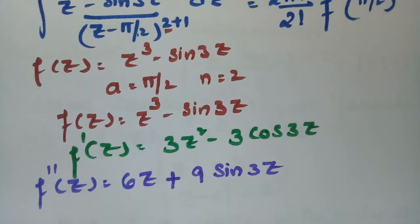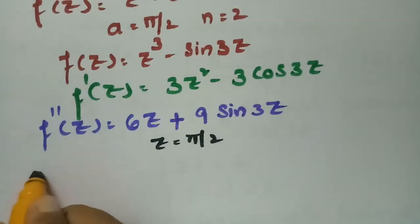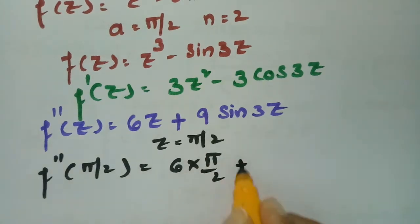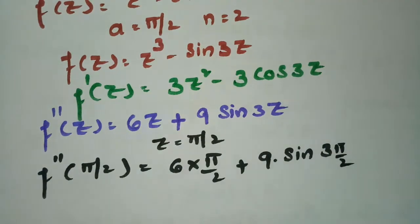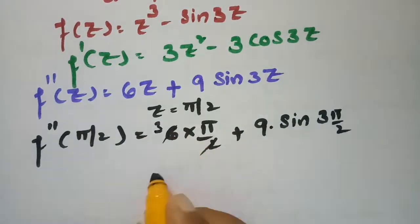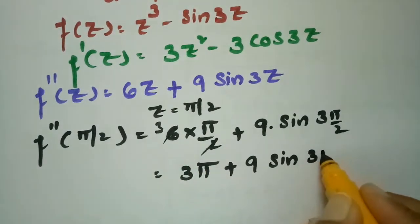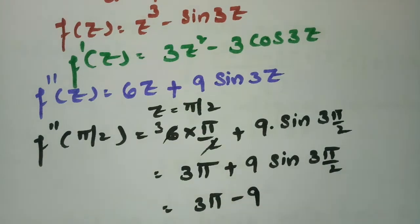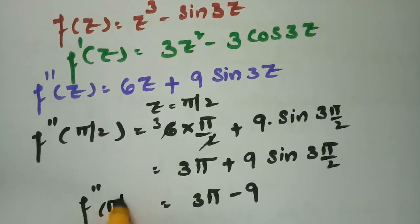Now we find f''(π/2) by substituting z = π/2: f''(π/2) = 6·(π/2) + 9·sin(3π/2) = 3π + 9·(−1) = 3π − 9.